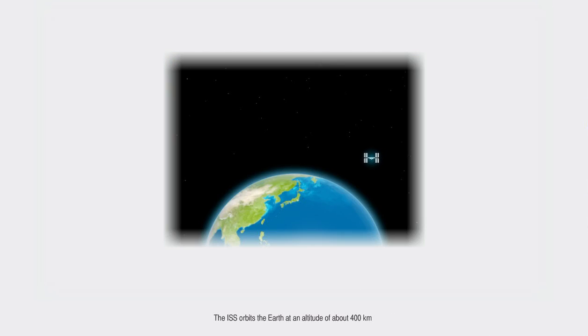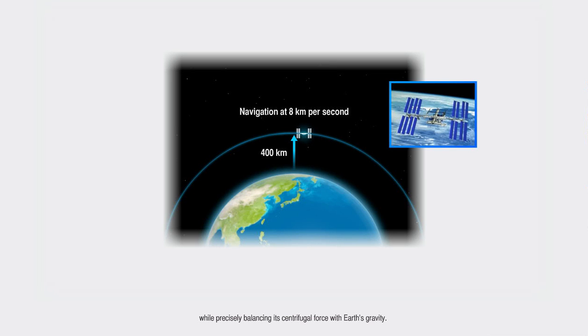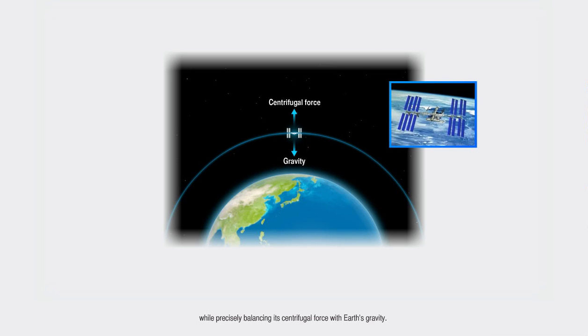The ISS orbits the Earth at an altitude of about 400 km, at an incredible speed of almost 8 km per second, while precisely balancing its centrifugal force with the Earth's gravity.